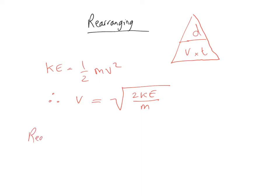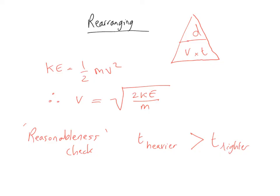The velocity can be found from v = √(2KE/m). When doing these calculations, always perform a reasonableness check. If you are given the time of flight for one substance and asked to calculate the time of flight for something heavier, the heavier ion should have a greater time of flight. Also note that the numbers are often very small — the ions pass through the tube very quickly — so answers are likely to be in standard form and very small.